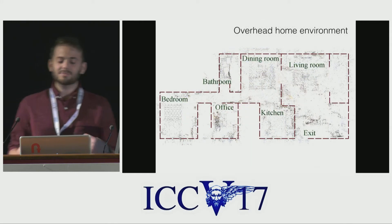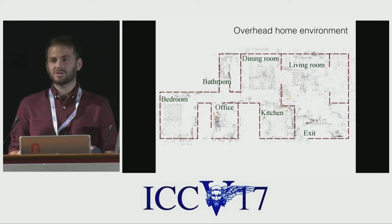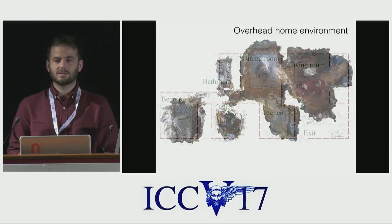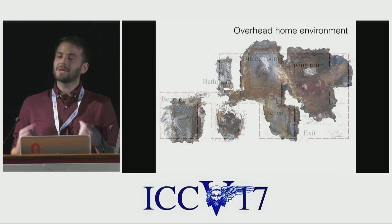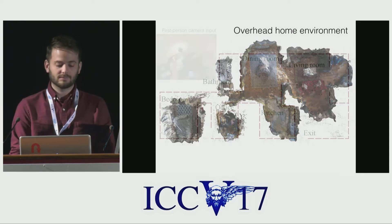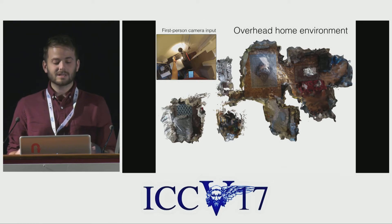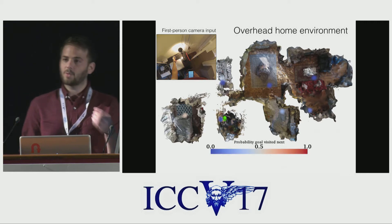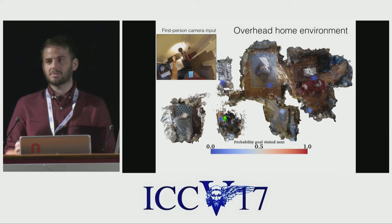I'll step through an example of forecasting a person's future. Consider a home environment, visualized first as a blueprint, and now in three dimensions. As the person moves through the environment, we capture their behavior with a first-person camera. We use this video to continuously update a prediction model. The model is used to forecast future goals, colored by their probabilities.